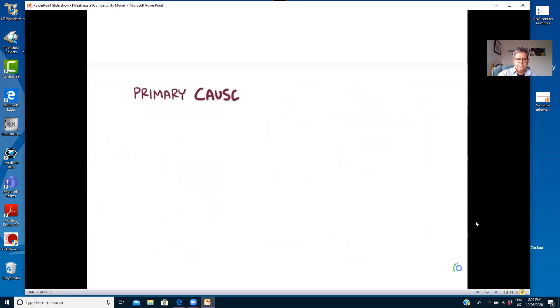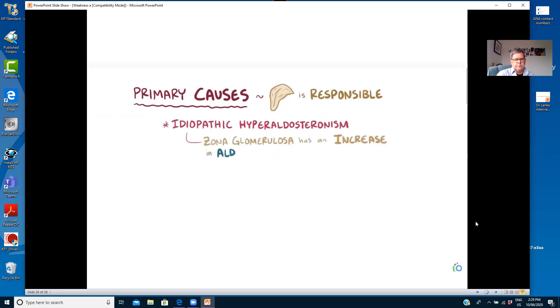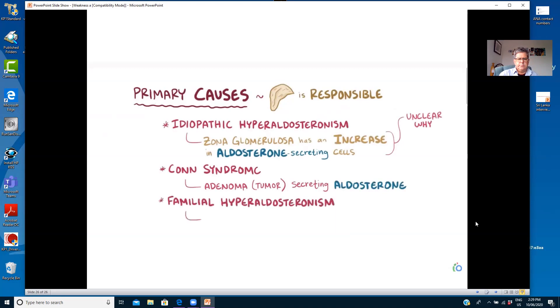Hyperaldosteronism can happen due to primary causes, which is where the adrenal gland itself is responsible for the excess production of aldosterone. The most common primary cause is called idiopathic hyperaldosteronism, because the zona glomerulosa has an increase in the number of cells secreting aldosterone, but it's not really clear why this happens. The second most common cause is called Conn syndrome, and this is where an adenoma, or tumor in the glandular epithelial cells, secretes too much aldosterone. A third cause is familial hyperaldosteronism, and this is a genetic condition that runs in families, and it's where the zona glomerulosa cells inappropriately make aldosterone in response to adrenocorticotropic hormone, which is secreted by the pituitary gland. And this is in addition to responding to renin as normal.